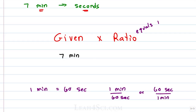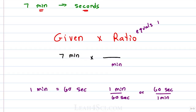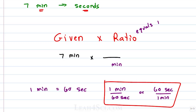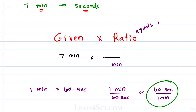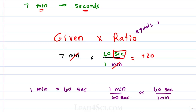Which form do we use? We need the denominator of the ratio to have the exact same unit as our given — this allows us to cancel. If we have minutes on top and minutes on bottom, minute over minute equals 1 and it cancels out, leaving us with the correct answer. So we find the form that puts minutes in the denominator: 60 seconds over 1 minute, because 60 seconds equals 1 minute. The minutes cancel, leaving us with 7 times 60. Six times 7 is 42, add the zero gives us 420 seconds, which equals 7 minutes.